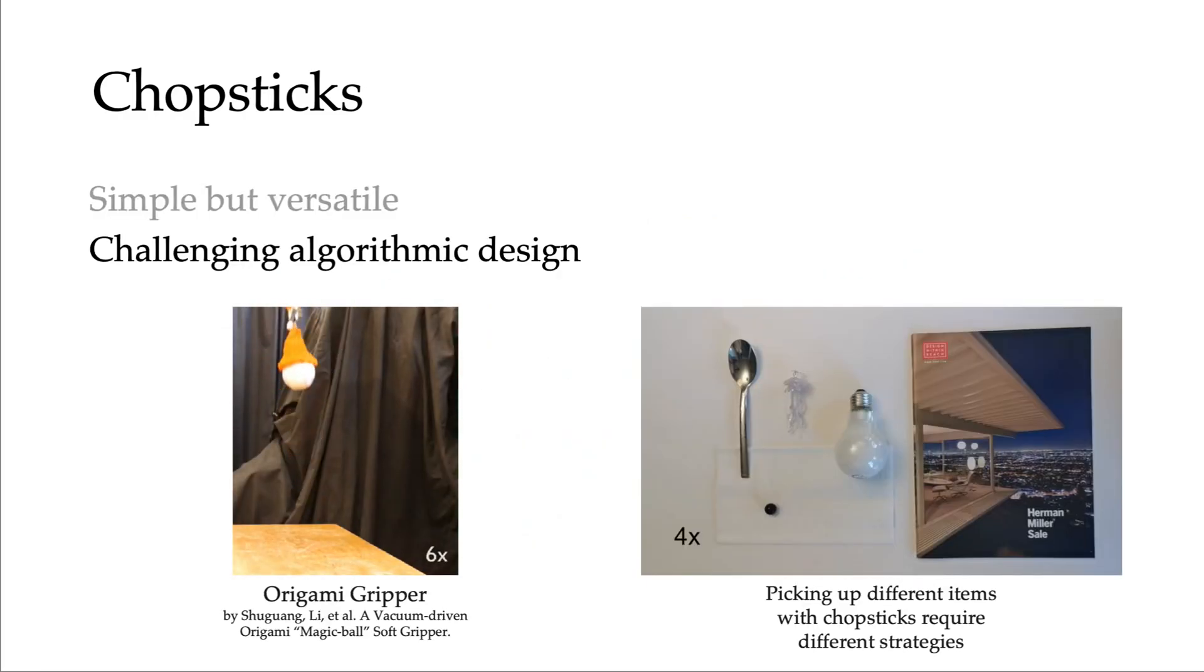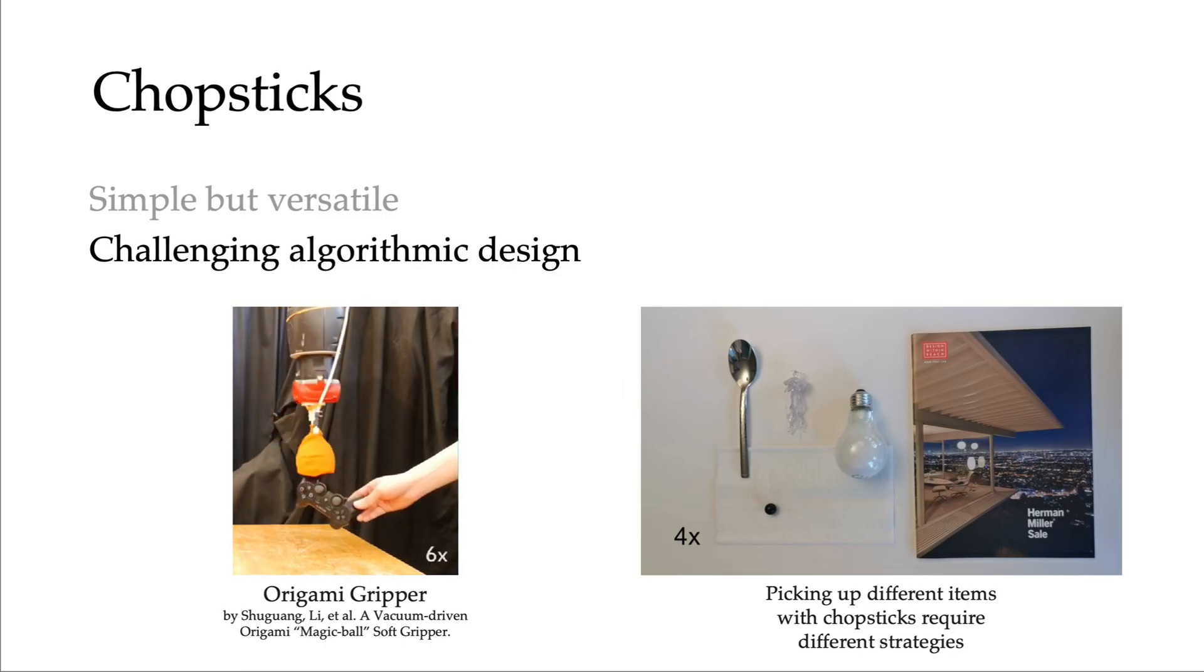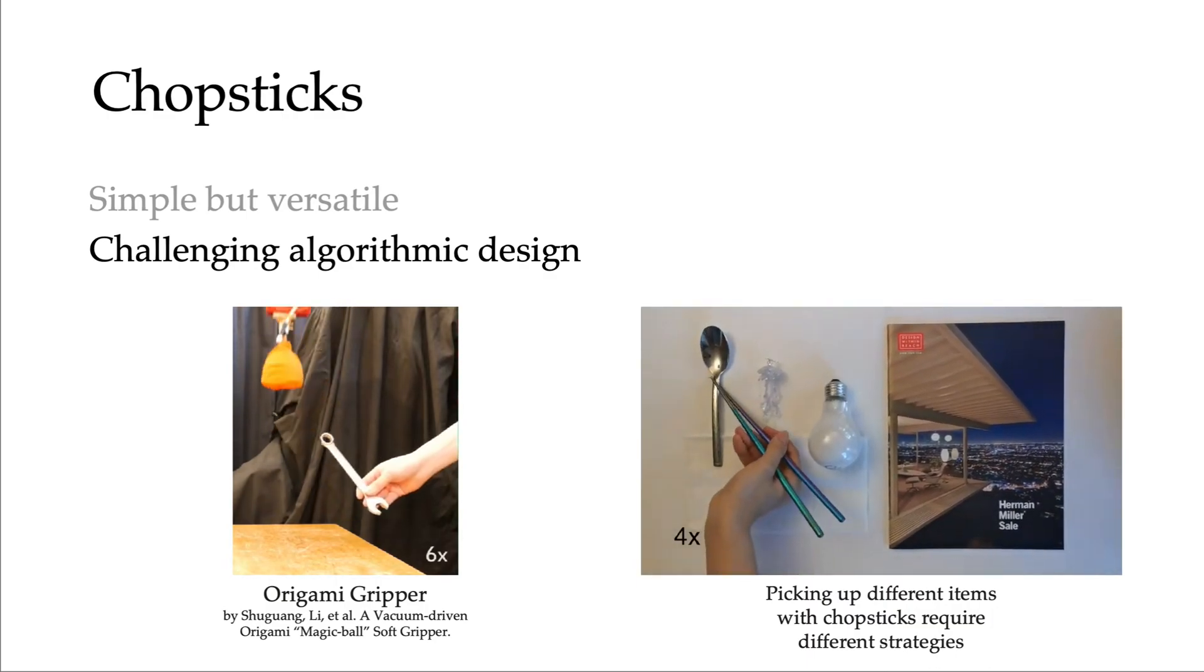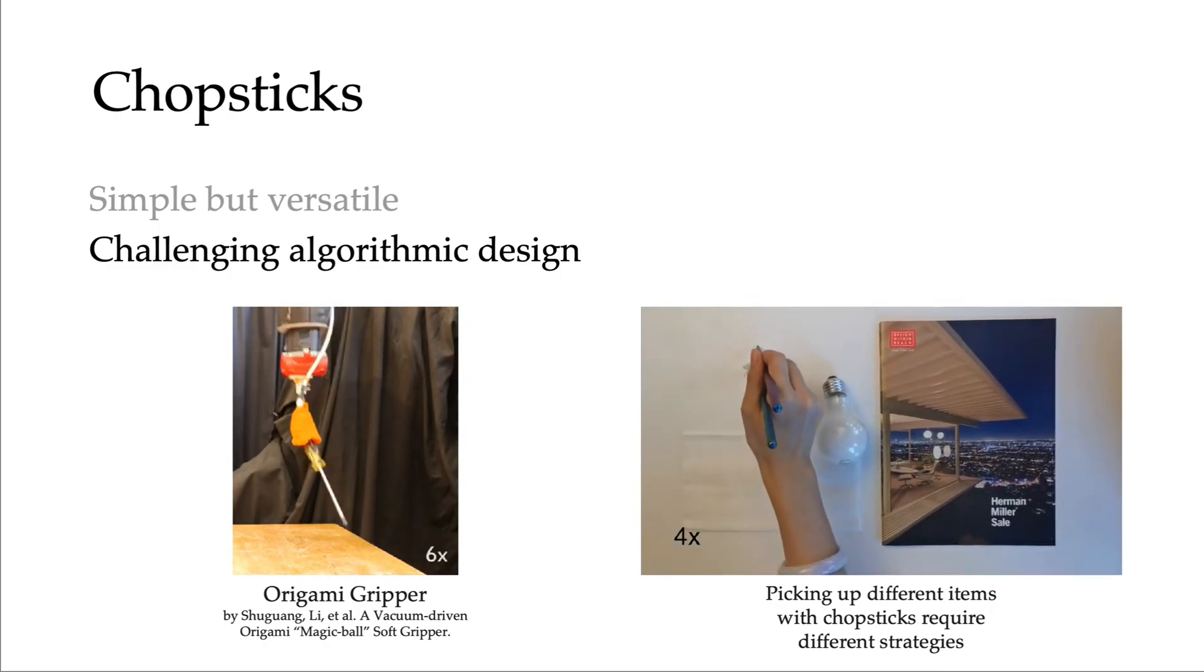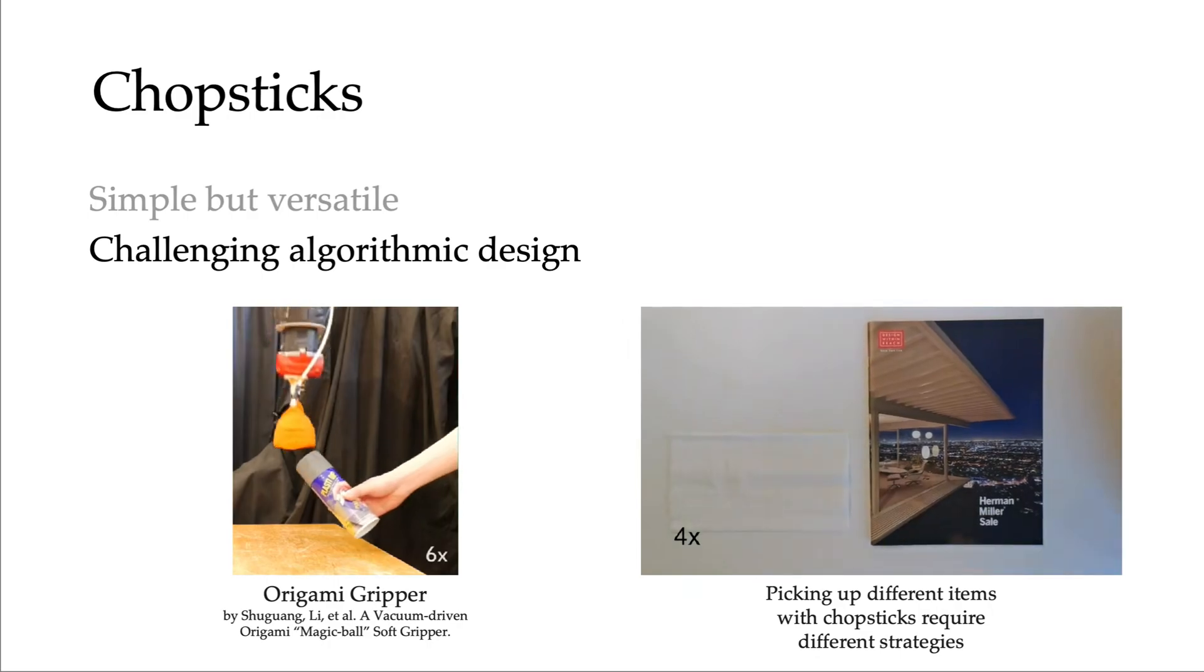Second, applying a simple tool to a diverse set of tasks can be challenging. End effectors with special design shown on the left might put less burden on control, picking up different items and using similar policies. Simple end effectors like chopsticks, as shown on the right, could pick up a diverse set of objects but require diverse strategies to handle different items.